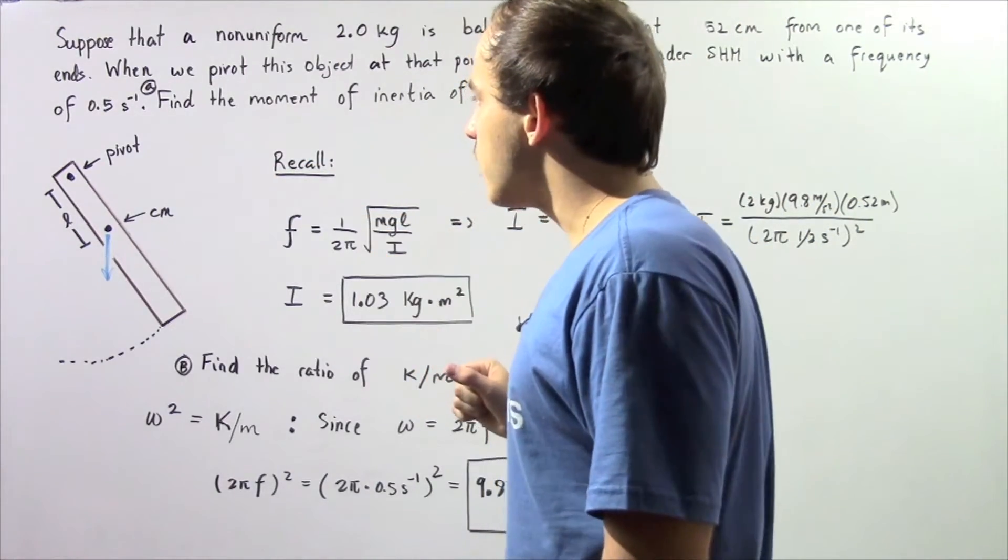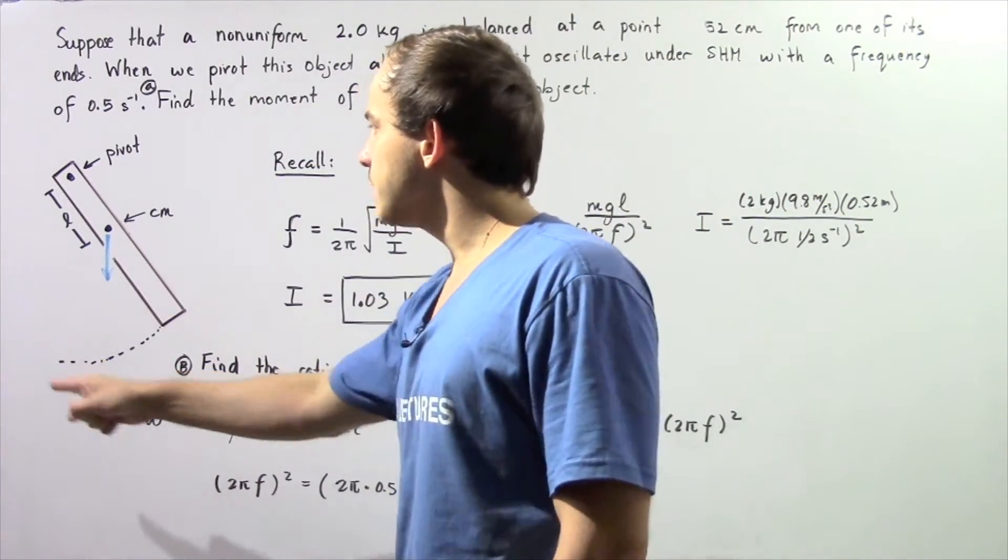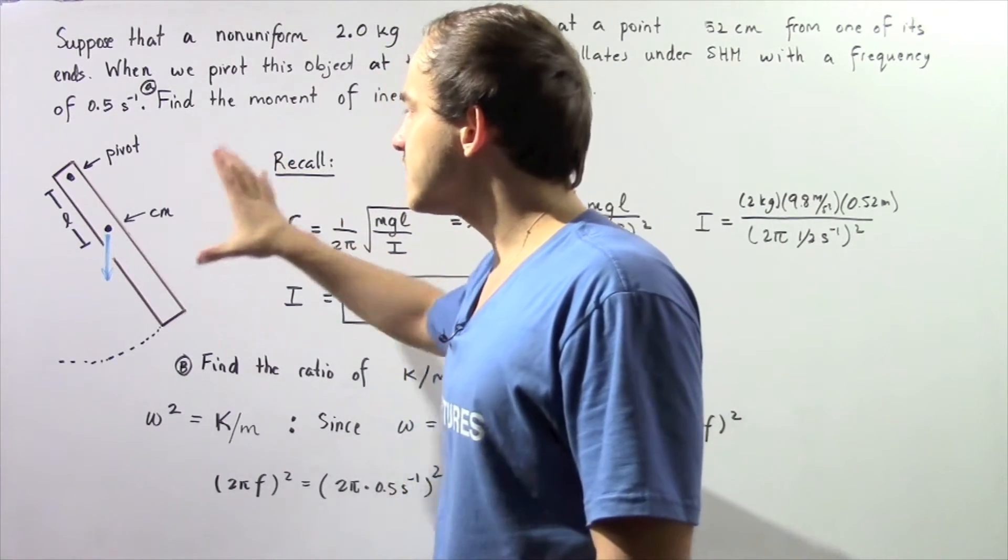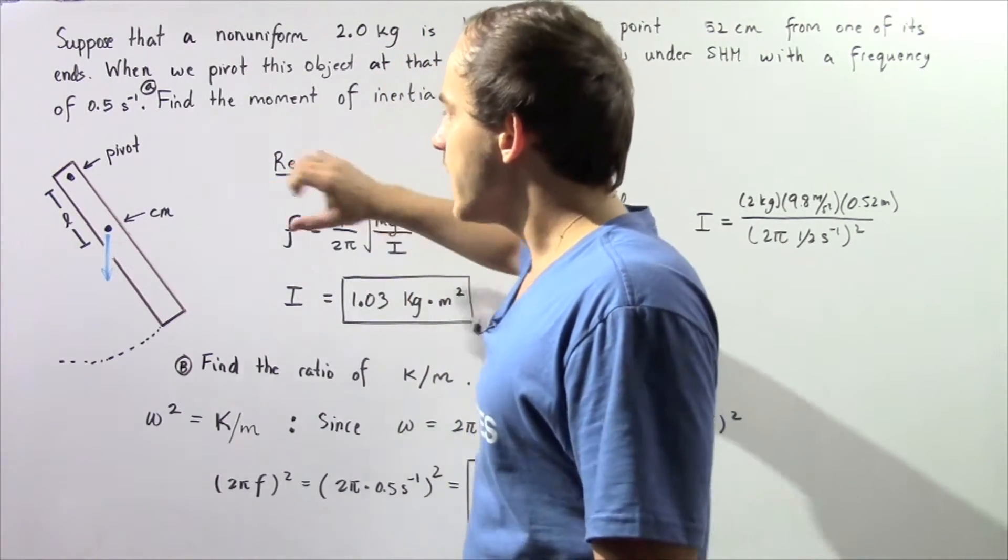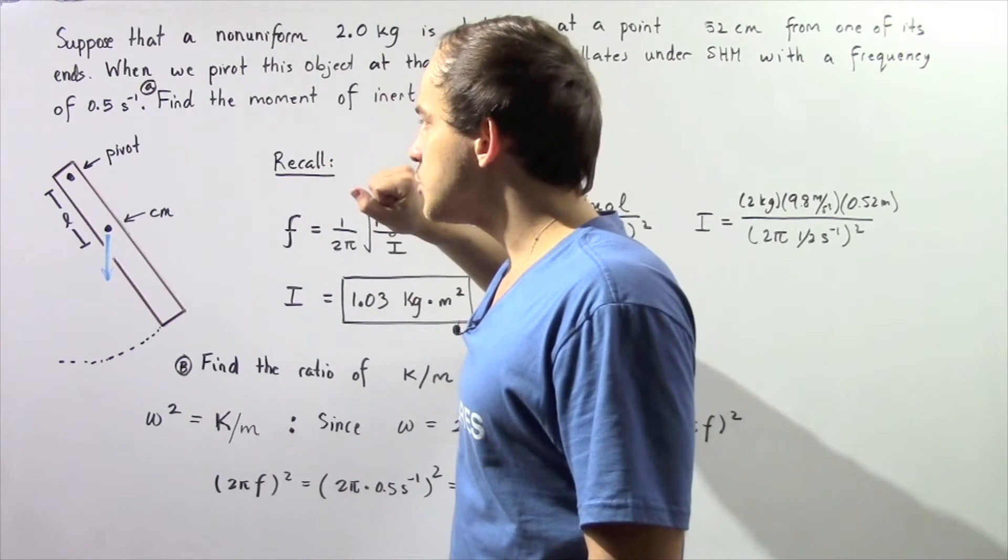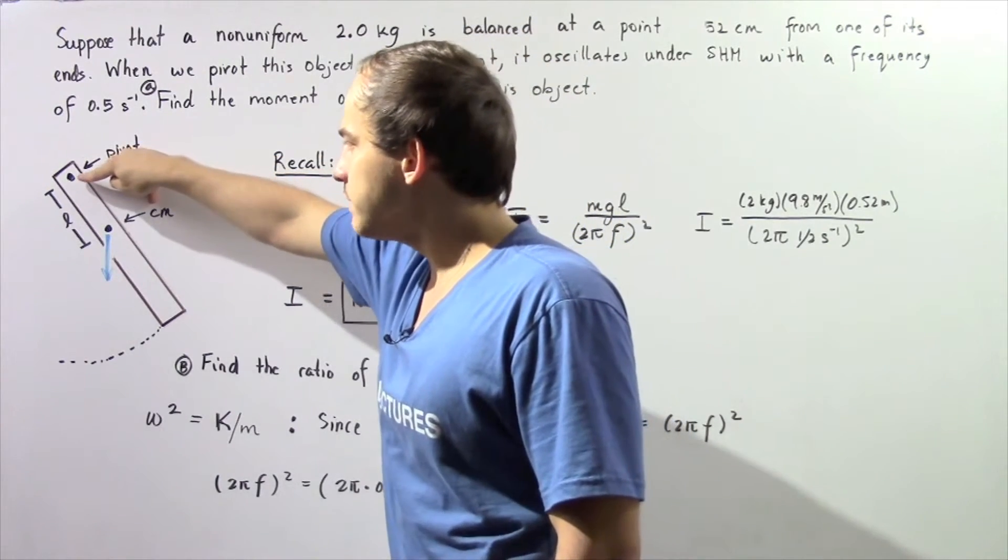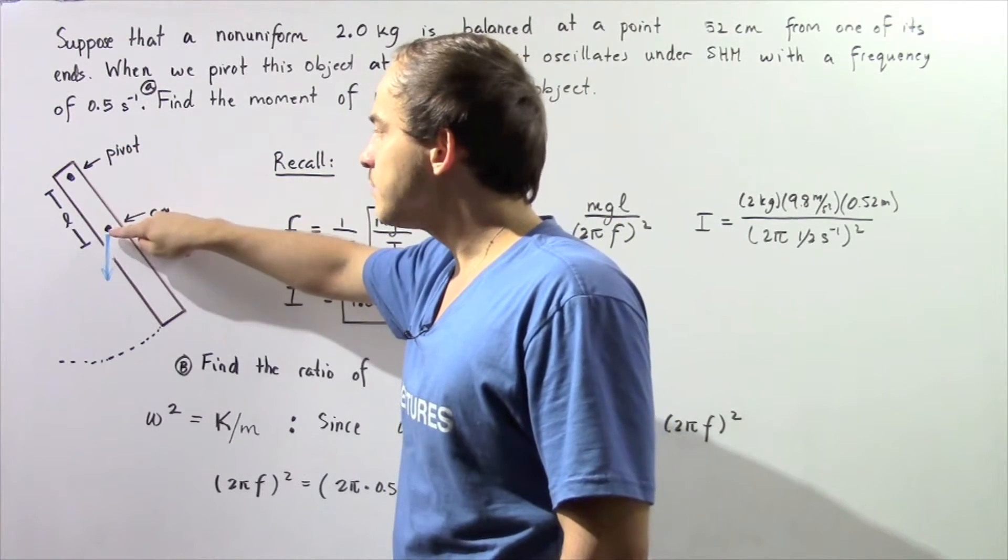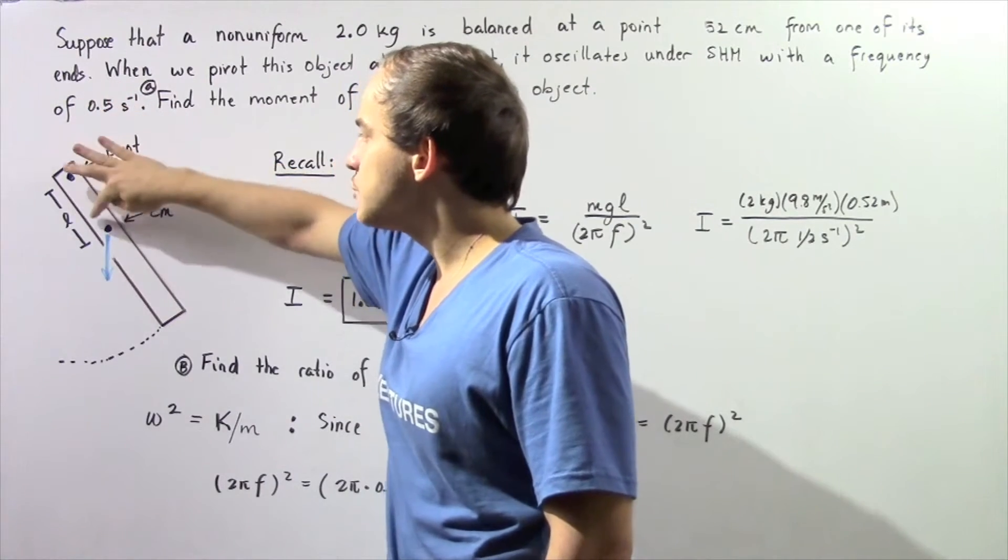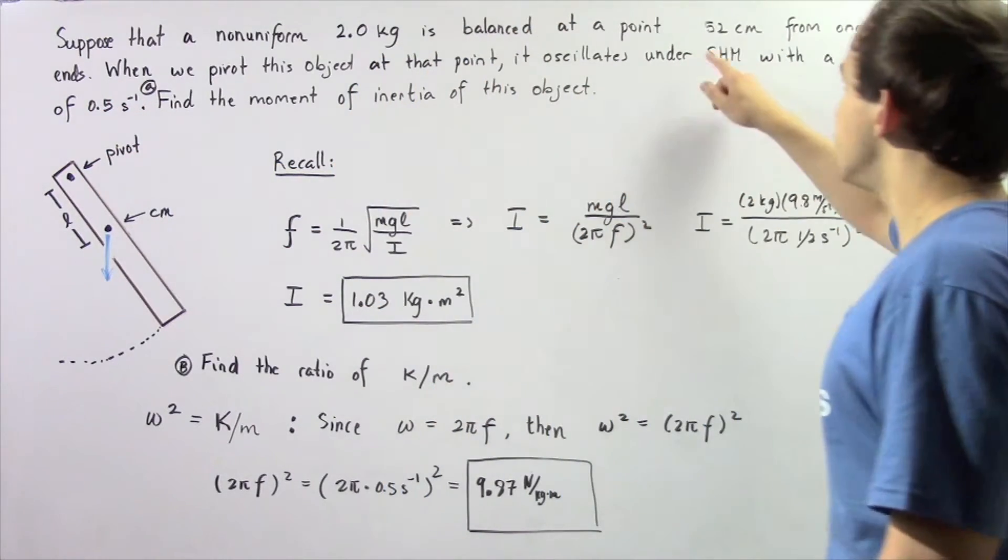Let's look at our diagram of the object that is oscillating back and forth. Suppose at some given moment in time it is in the following position. This is our pivot, this is our center of mass, and the distance from the pivot to the center of mass is given to be 52 cm.